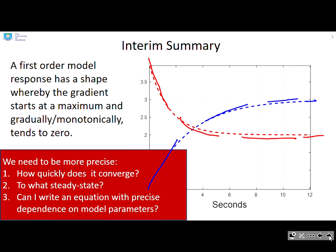So the next question is, we might want to be a bit more precise. How quickly do these curves converge to zero gradient? Here you can see I've got a particular timescale, but where's that timescale come from? What is the steady state that they end up at? How do I know what the steady state is? And can I write an equation with precise dependence on model parameters?